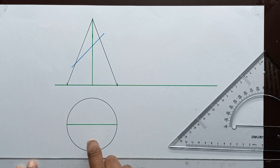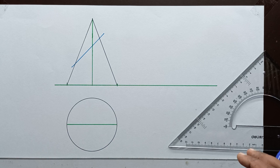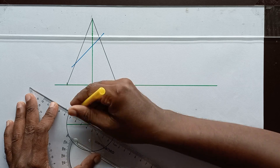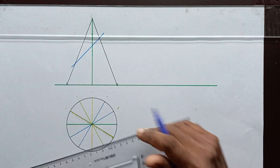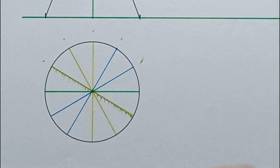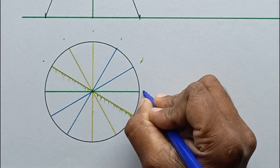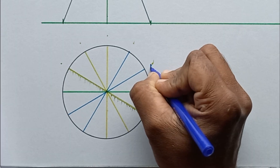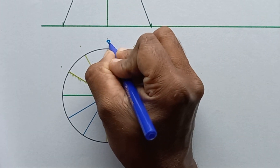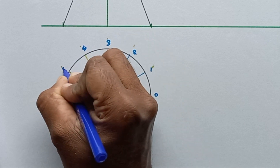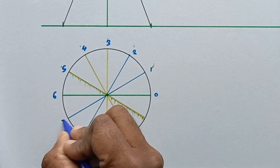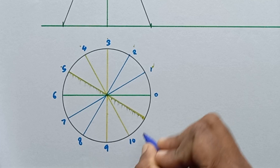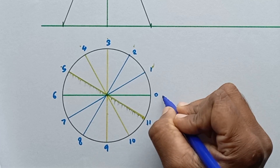First of all, I am going to divide this circle into 12 equal segments. Let me mark these points: number zero for this point, then number one, number two, number three, number four, number five, number six, number seven, number eight, number nine, number ten, number eleven, and back to number two.